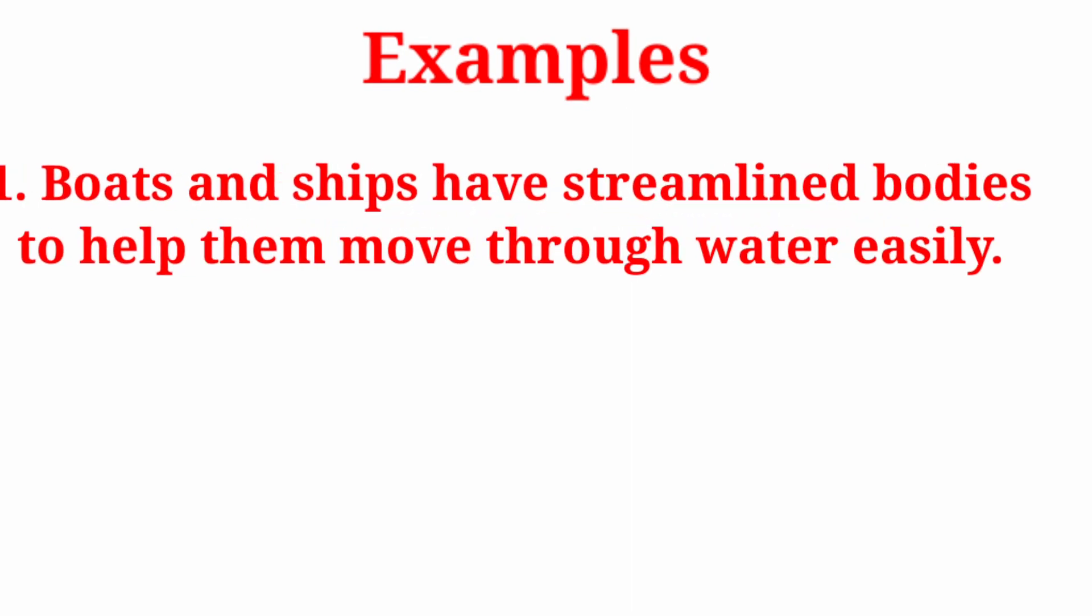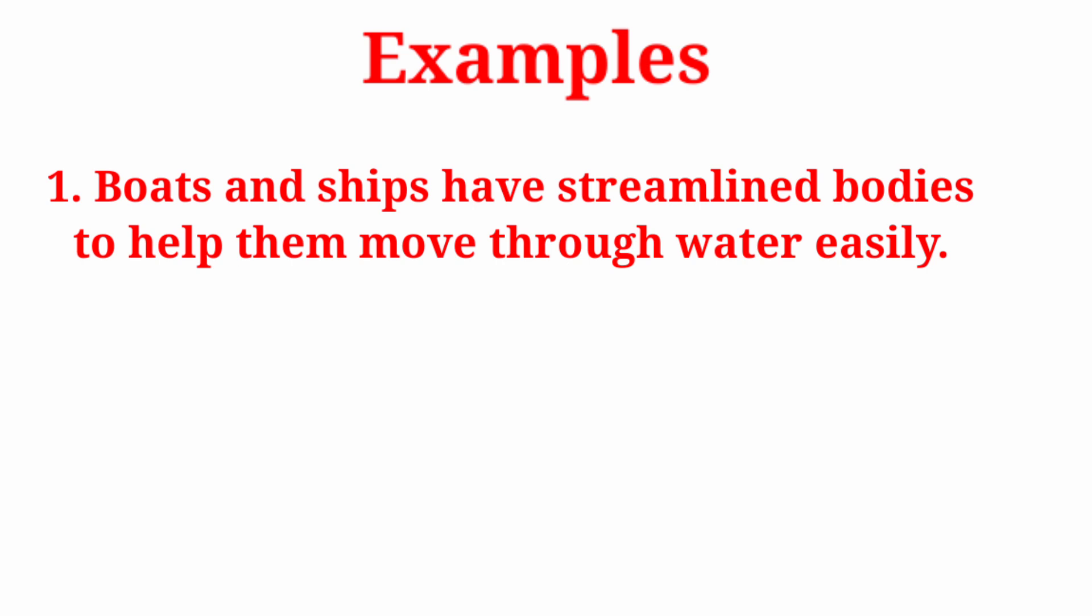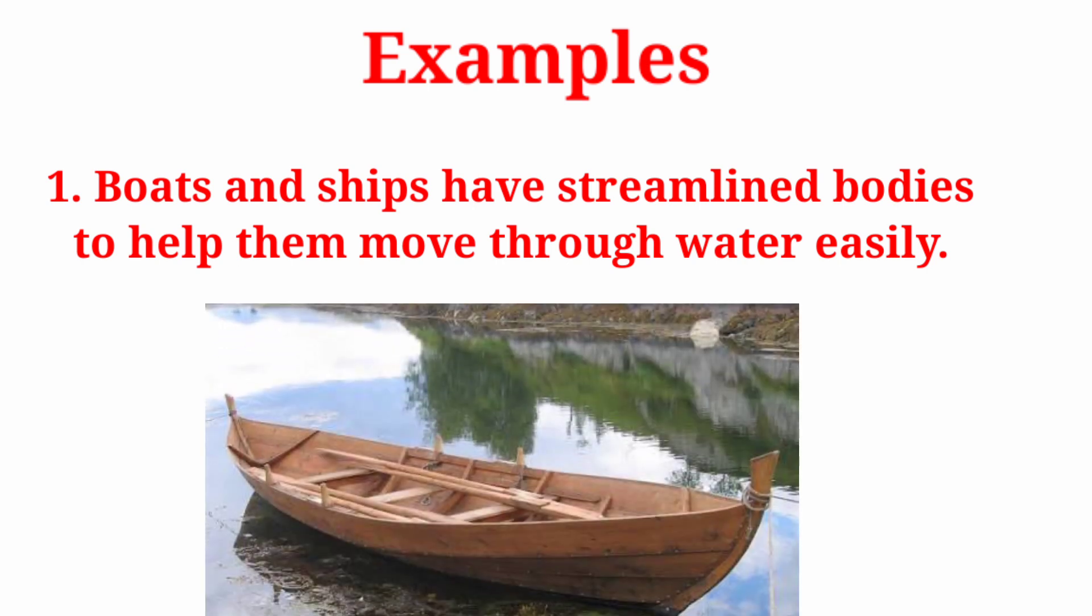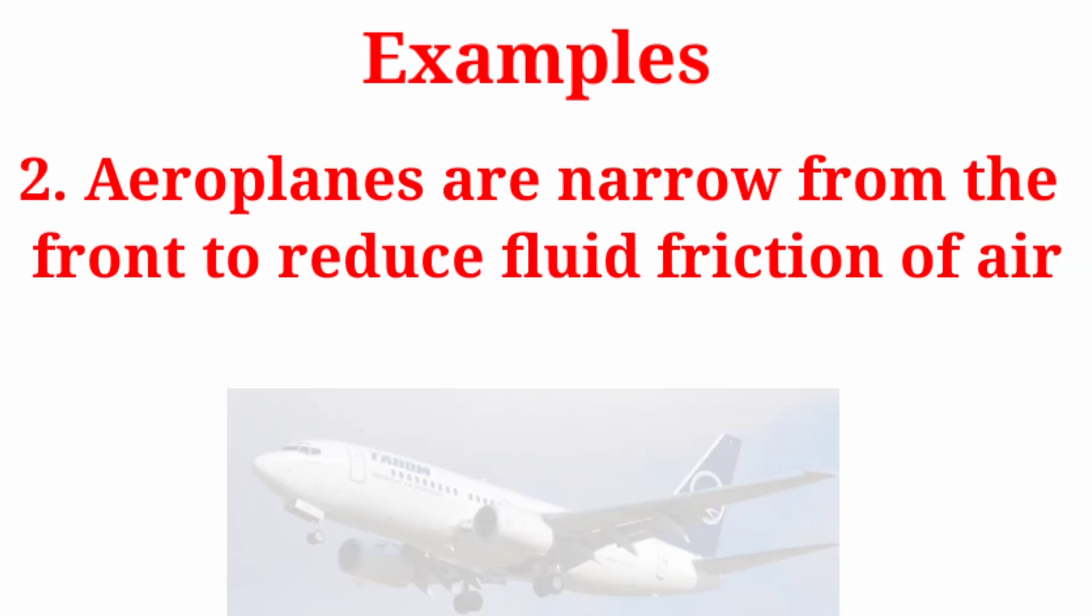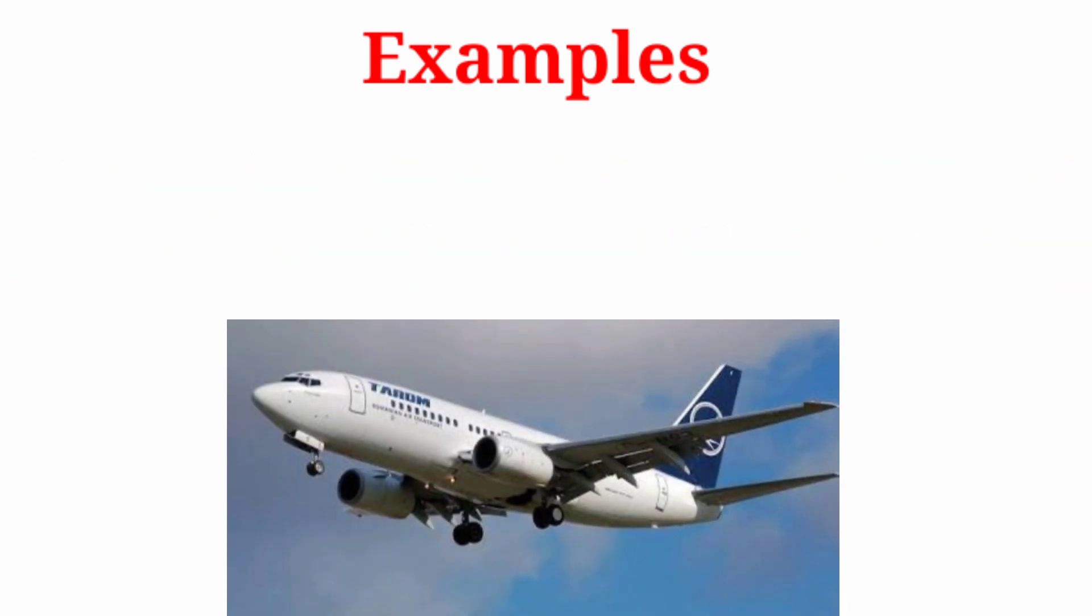Some examples to show how streamlining reduces fluid friction: boats and ships have streamlined bodies to help them move through water easily. Aeroplanes are narrow from the front to reduce fluid friction of air.